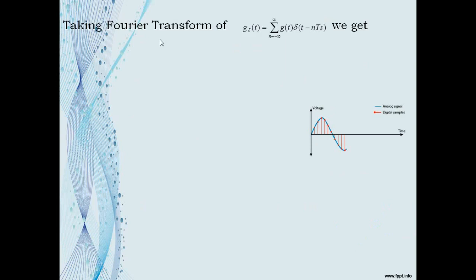Taking the Fourier transform of G_δ(t) = Σ (n = −∞ to ∞) G(t) δ(t − nTs): we know that a product in the time domain equals convolution in the frequency domain.